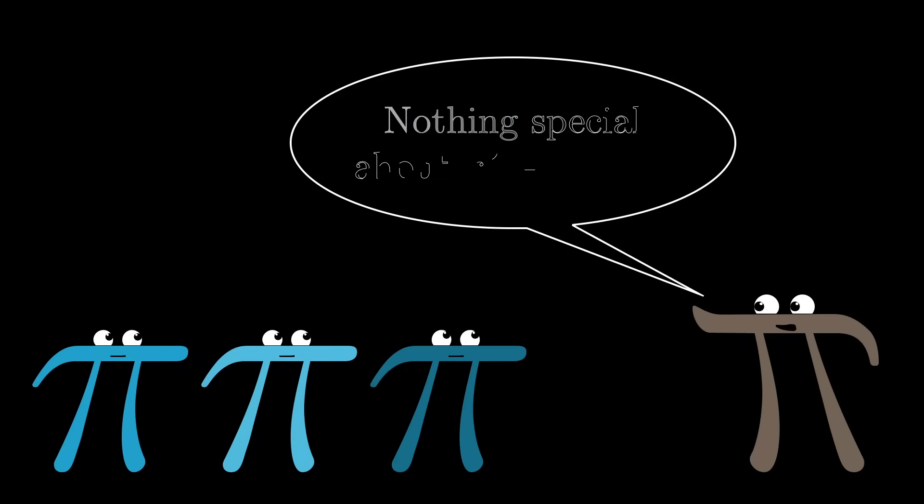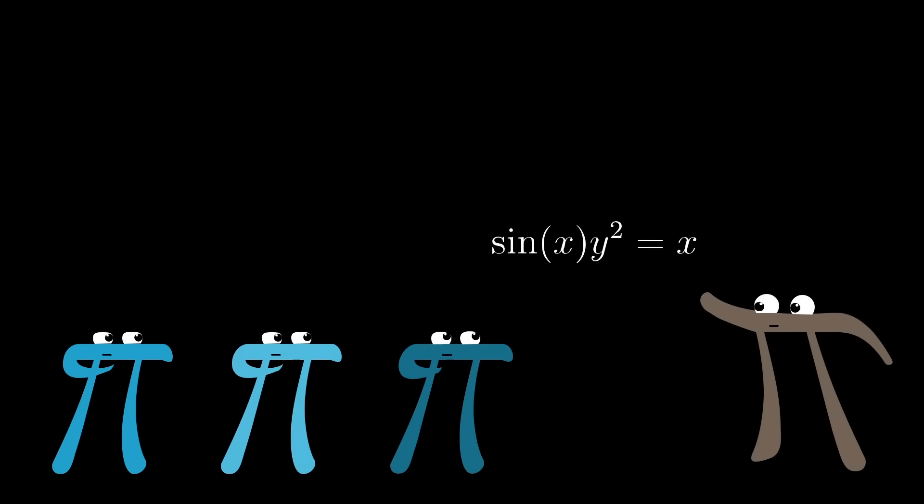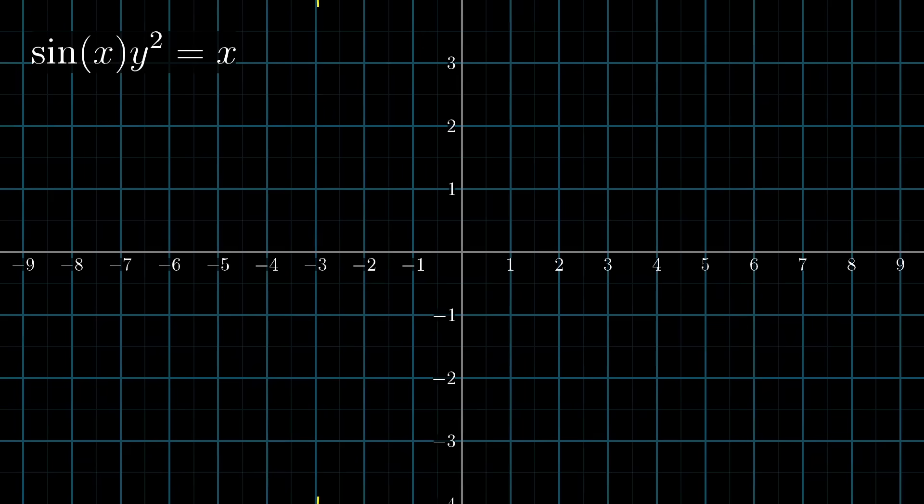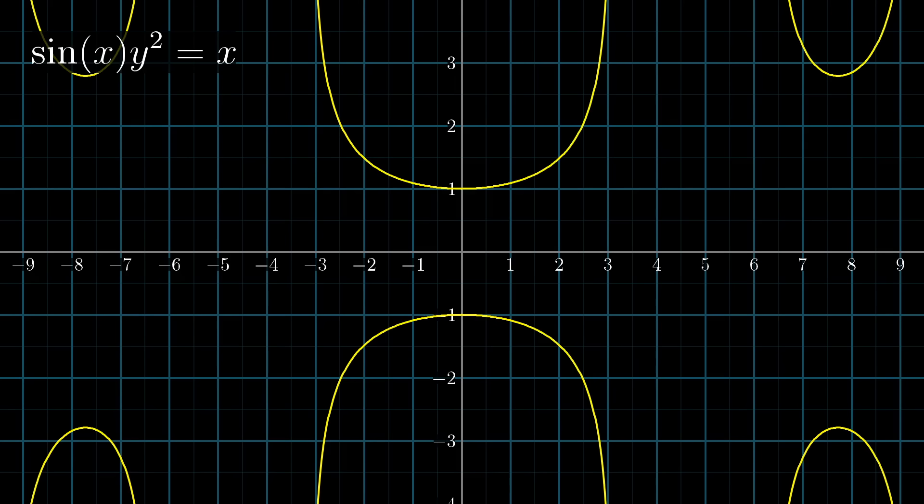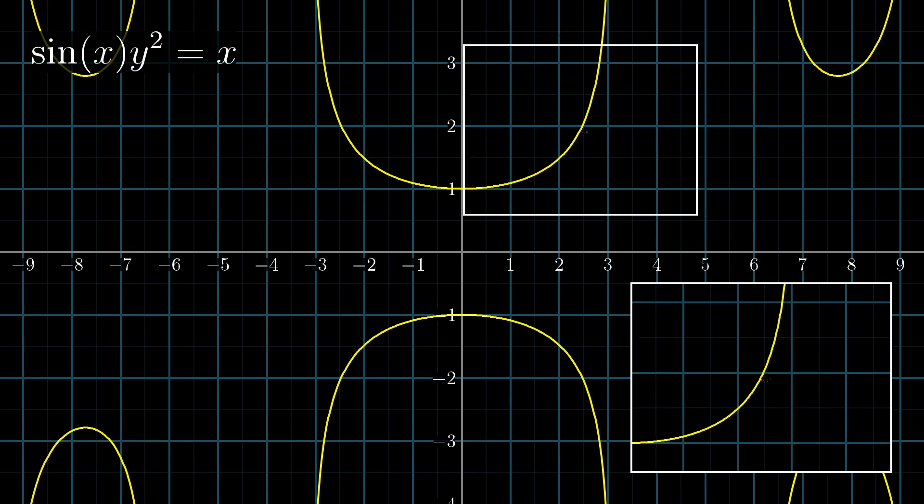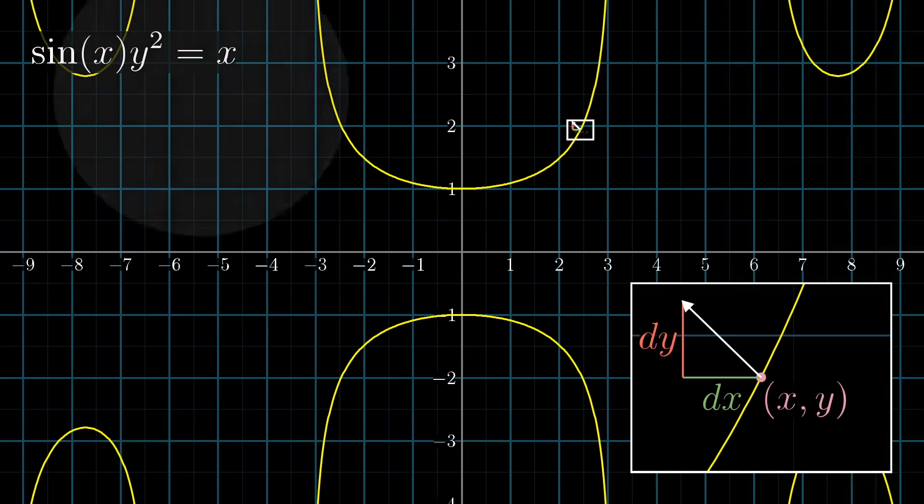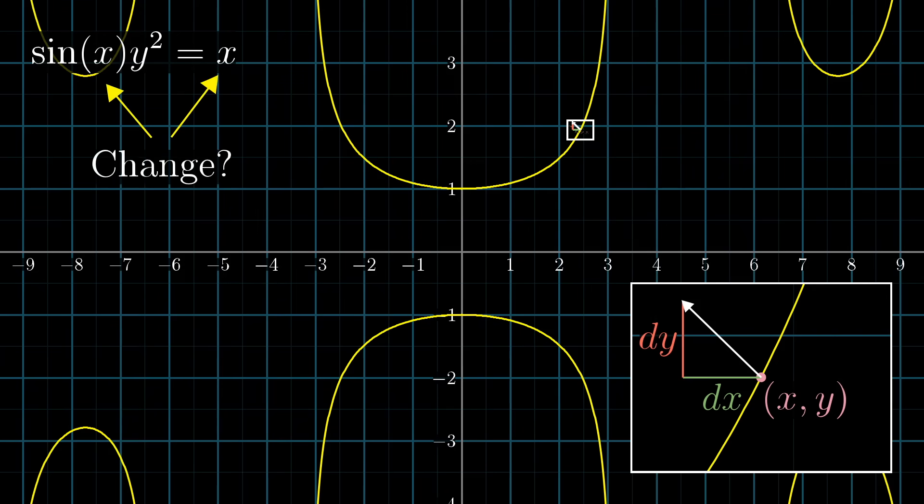Of course, there's nothing special about the expression x² + y² = 5². It's always nice to think through more examples, so let's consider this expression sin(x) times y² = x. This corresponds to a whole bunch of u-shaped curves on the plane. And those curves represent all of the points (x,y) where the value of sin(x) times y² happens to equal the value of x. Now imagine taking some tiny step with components dx, dy, and not necessarily one that keeps you on the curve.